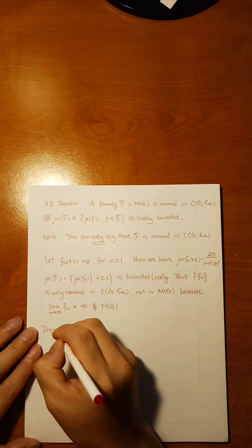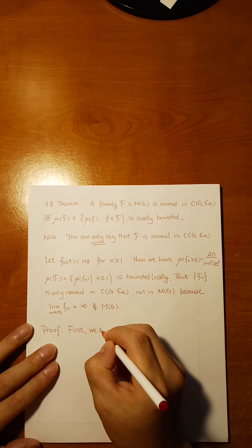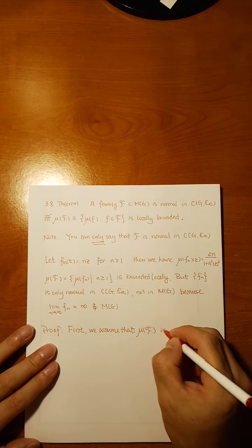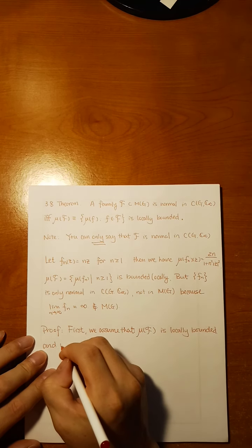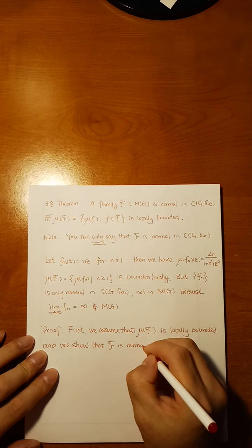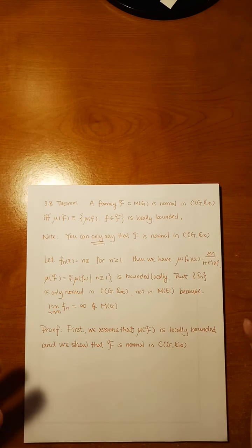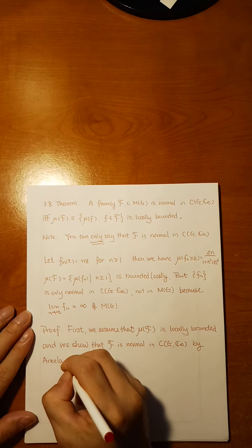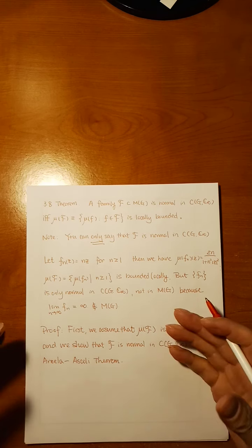Now let's see the proof. The proof has two parts. First, we assume that μ(F) is locally bounded and we show that F is normal in C(G, C∞). Normality in general uses the Arzelà-Ascoli theorem. By the Arzelà-Ascoli theorem, remember it has two conditions.